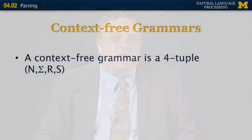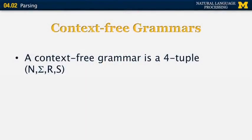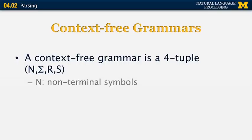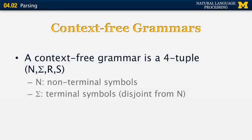The next topic is context-free grammars. A context-free grammar is a four-tuple consisting of N, sigma, R, and S. N is a set of non-terminal symbols, for example symbols for sentences, prepositional phrases, verb phrases, and so on. Sigma is a set of terminal symbols — those are words, for example Mary, John, or 'like.' It is assumed that the set of terminal symbols is disjoint from the set of non-terminal symbols.